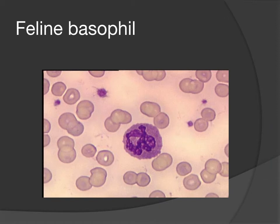Here's an image of a feline basophil. This one almost looks like it doesn't have a lot of granules because it didn't stain perfectly, but it has a dark basophilic cytoplasm and a multi-lobed nucleus. Seeing this cell alone, you'd need to scan the slide to look at what the neutrophils look like, because this almost looks like it could be a toxic neutrophil — we do see basophilic cytoplasm in toxic neutrophils.